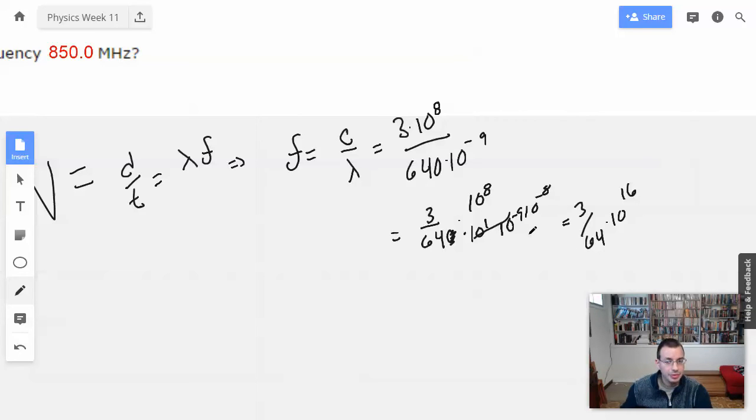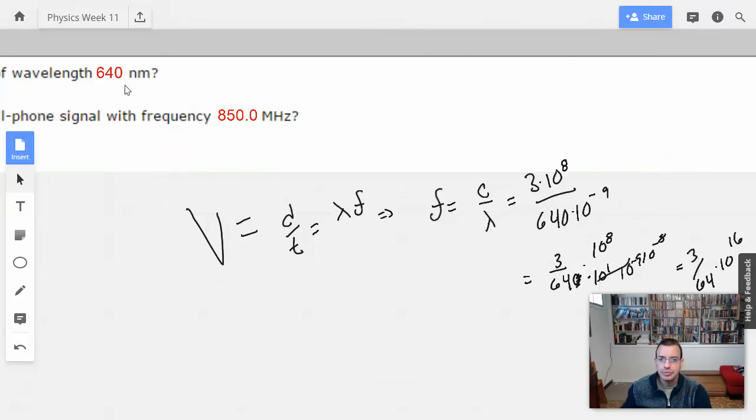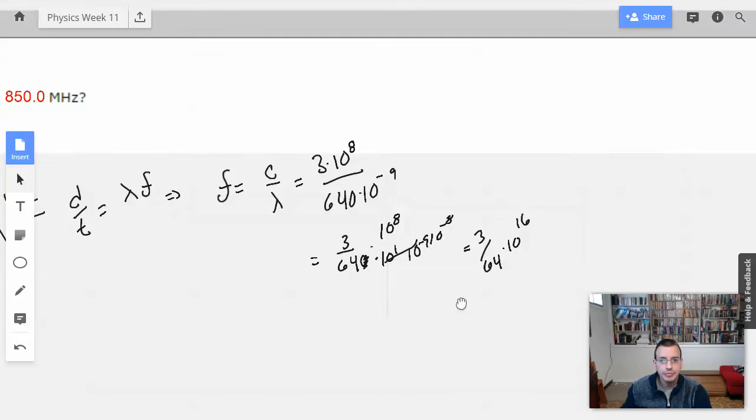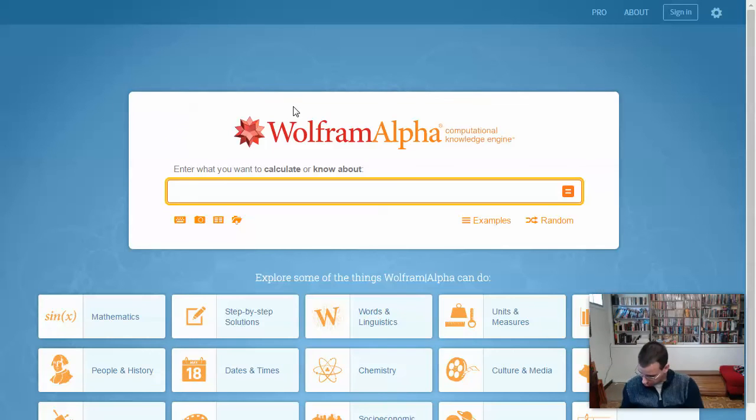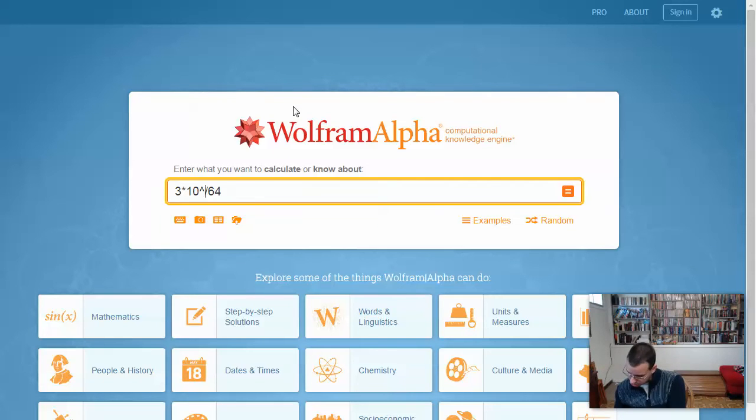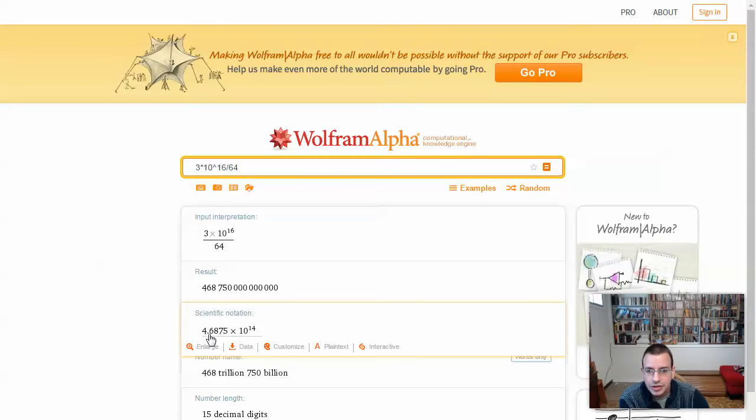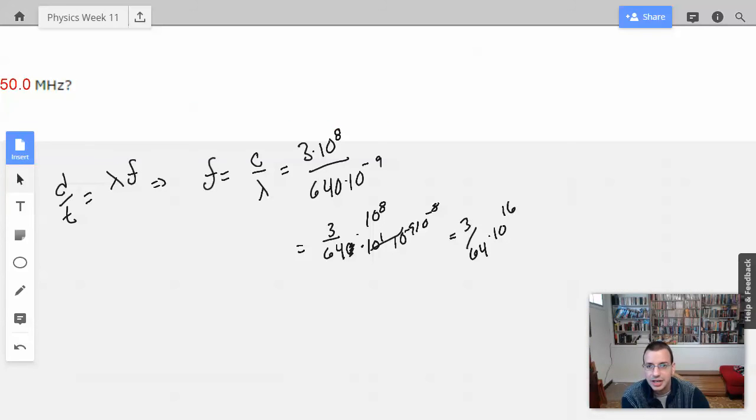Because you've got 10 to the negative 8th on the bottom. 640 nano, yep. So let's do 3 divided by 64, 3 times 10 to the 16th. And we get 4.69 times 10 to the 14th equals 4.69 times 10 to the 14th, which is really big.